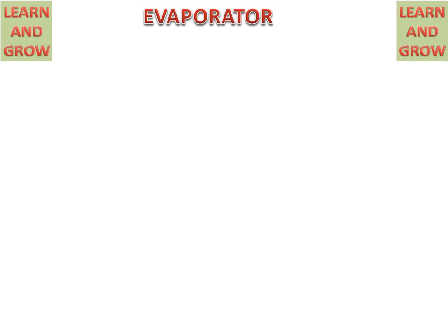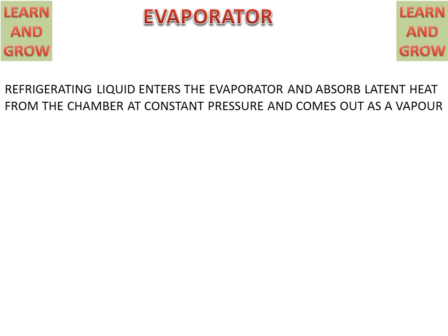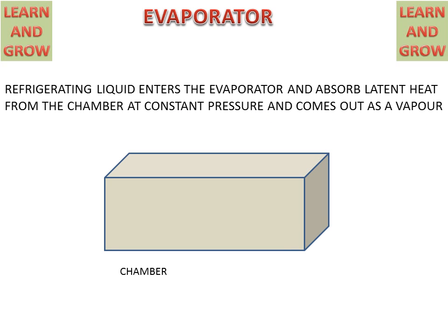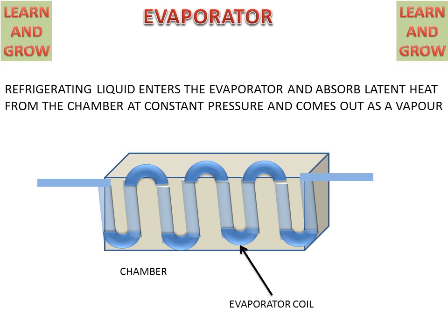Now we see the evaporator parts and working. Refrigerating liquid enters the evaporator and absorbs latent heat from the chamber at constant pressure, and comes out as a vapor. We have a chamber with an evaporator coil. On the left side there is a refrigerant liquid inlet pipe and on the right side there is a refrigerant vapor outlet pipe. The liquid enters the evaporator, takes the latent heat from the chamber, and converts into vapor form which then goes outside.